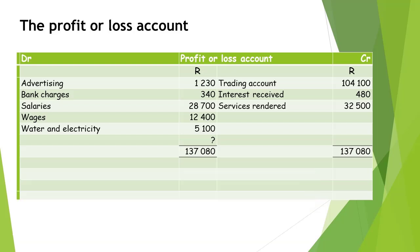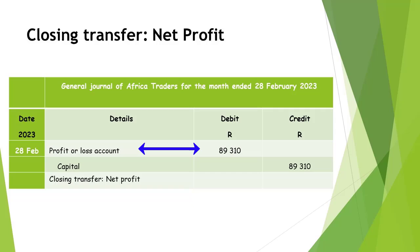In order to close the profit or loss account, we will need an entry on the debit side. Remember that a closed account will have a zero balance, which means that the total of the account on the debit side must be equal to the total of the credit side. The profit or loss account will be debited with R89,310 and the balance is transferred to the capital account, which means the capital account will be credited with R89,310.